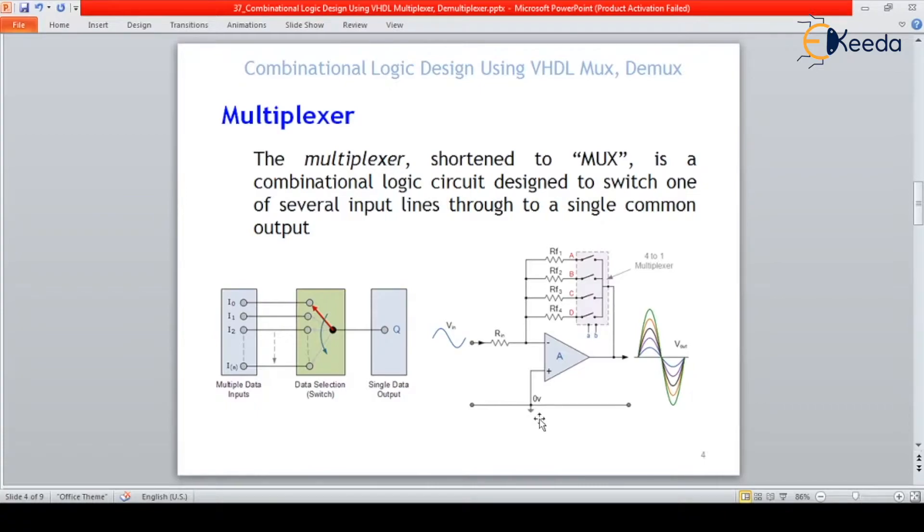So what is a multiplexer? Multiplexer, also shortly written as MUX, is a combinational logic circuit designed to switch one of several input lines through a single common output. So multiplexer has many inputs, single output. To direct this many input signal to a single output, we definitely require some select lines. Below are two applications shown. Here we can see multiple inputs, input data are routed to a single data out through this data selection switch, which is nothing but the multiplexer.